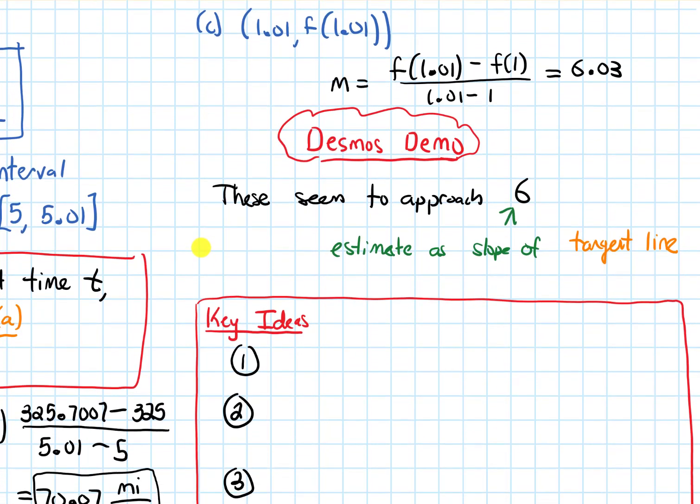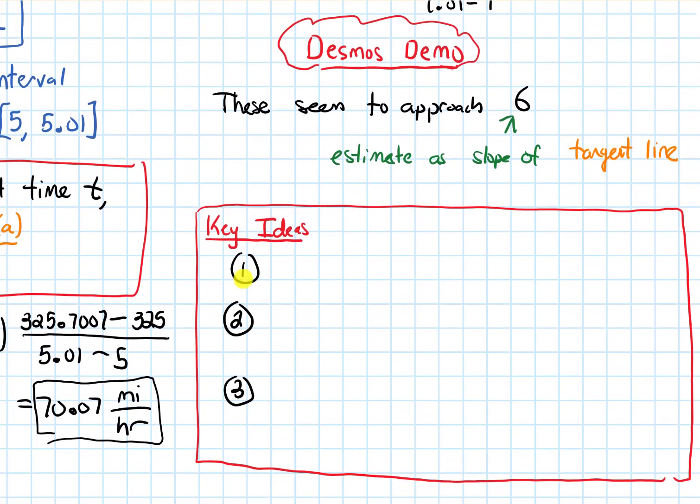Alright, so I want to end this video by recapping the key ideas from this section. So the first is, remember in the previous video, we talked about average velocity. And the formula for average velocity is really similar to the slope of the secant line. In fact, it's kind of exactly the same. So the average velocity is, in fact, the slope of the secant line, when my function is a position function.